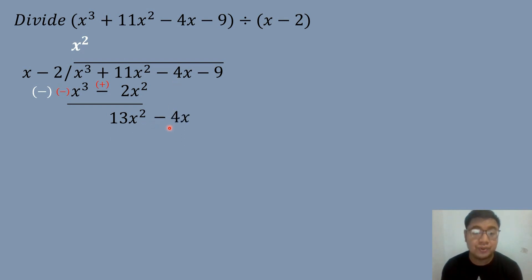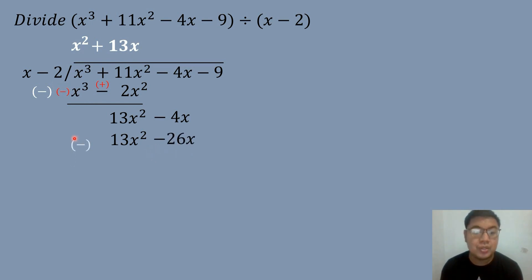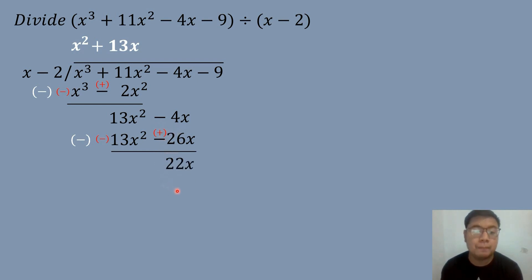Then bring down negative 4X and repeat the process. Divide 13X squared by the first term of the divisor: 13X squared divided by X equals 13X. Multiply 13X times X equals 13X squared. Then multiply 13X times negative 2 equals negative 26X. Subtract: 13X squared minus 13X squared equals 0, canceled out. Negative times negative is positive, so positive 26X. Then negative 4X plus 26X equals positive 22X.